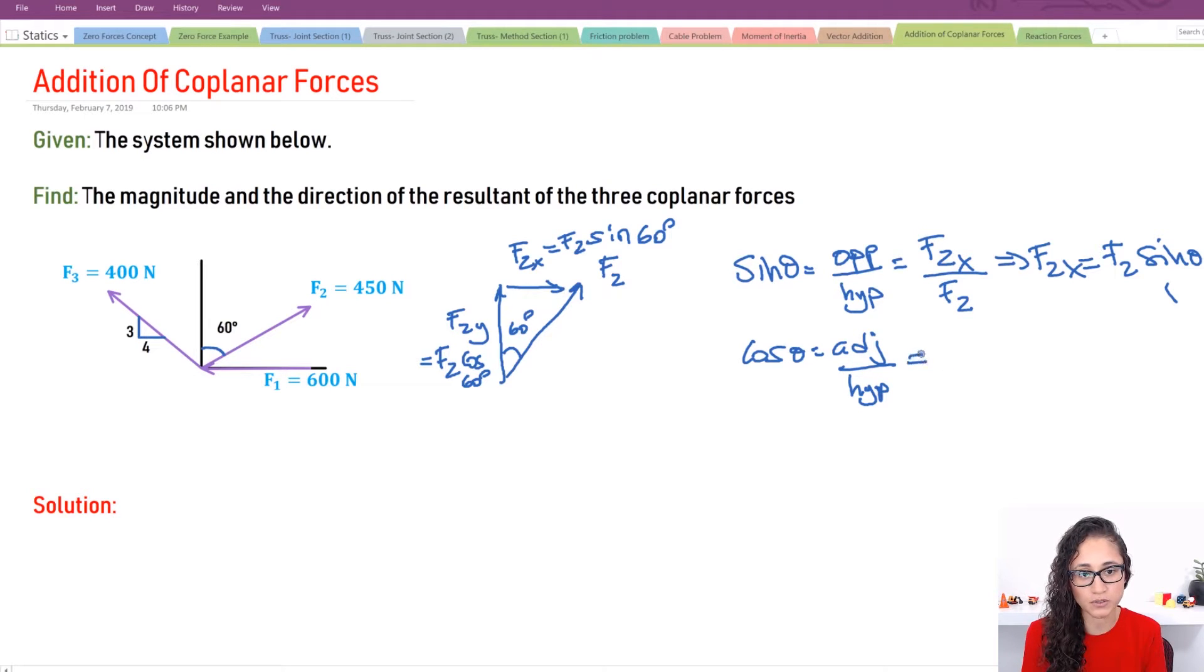And then same thing for cosine. So I have F2y adjacent is this one. So I have F2y over F2. So F2y is equal to F2 cosine theta. And that's exactly what we did here.